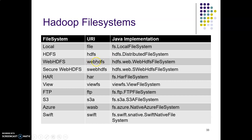For web-oriented HDFS, we use the URI 'webhdfs' and the Java implementation is 'WebHdfsFileSystem'. Similarly, for Secure WebHDFS we also use the 'WebHdfsFileSystem'. For HAR, which is the Hadoop Archive file system, we use 'fs.HarFileSystem'. For View FS and FTP (File Transfer Protocol), we use URI 'ftp' and the Java class 'fs.FTPFileSystem'. For S3, we use the URI 'S3A' and the Java implementation is 'fs.s3a.S3AFileSystem'.